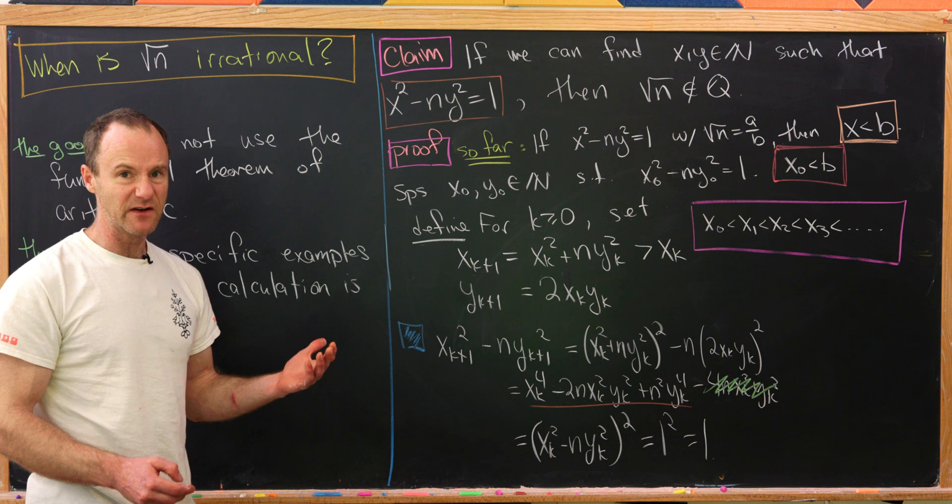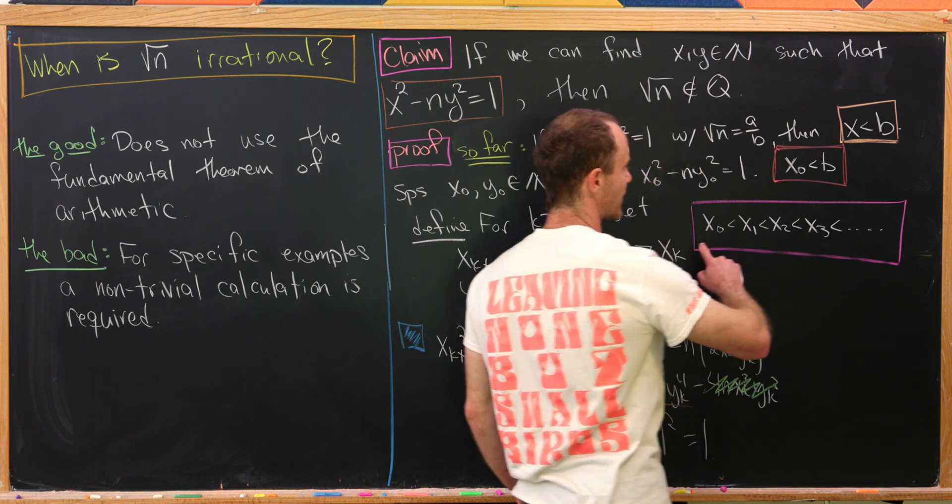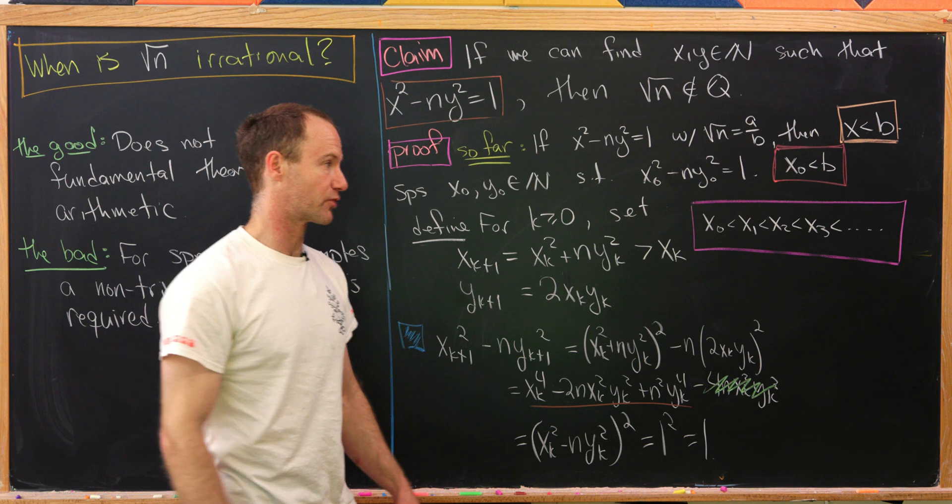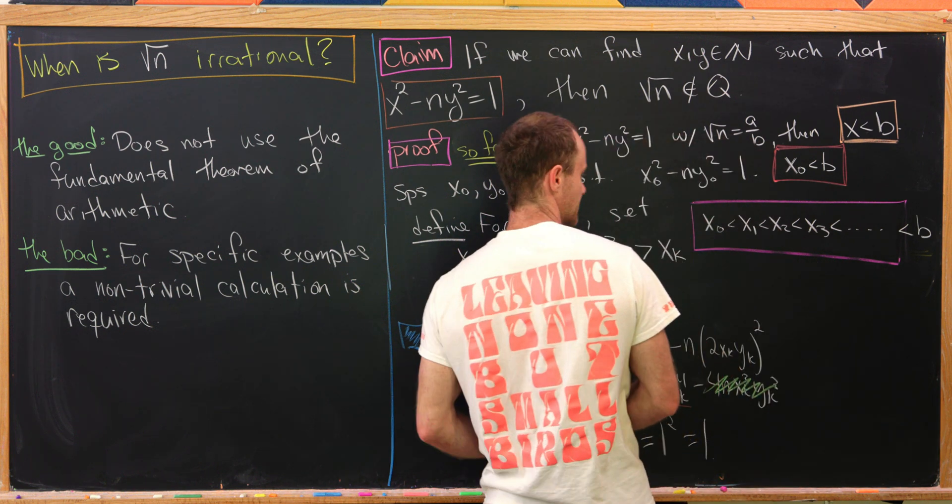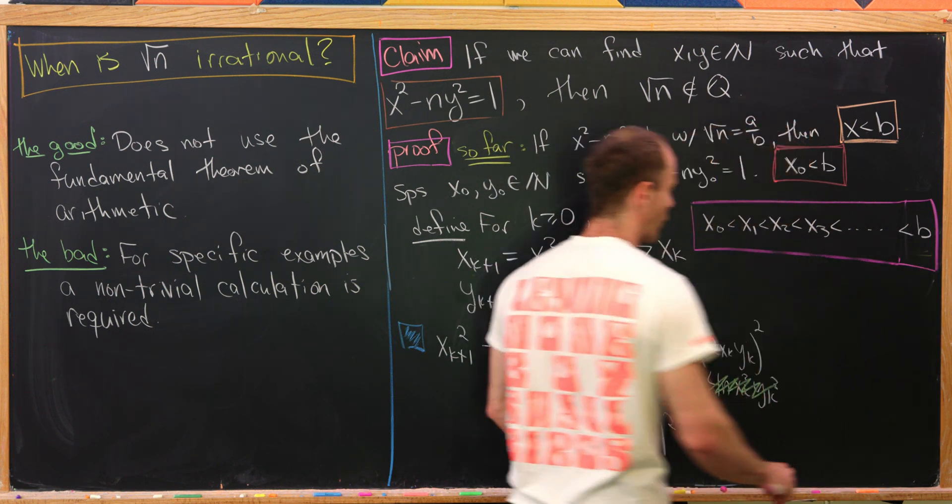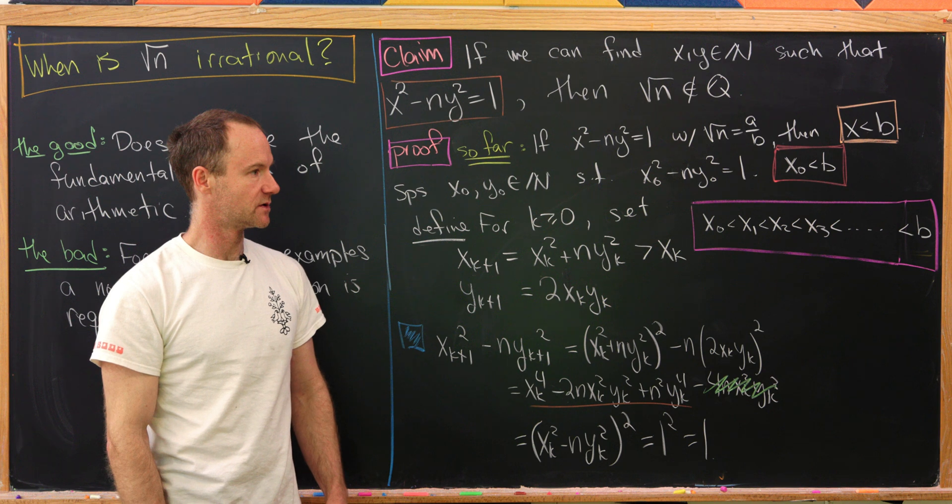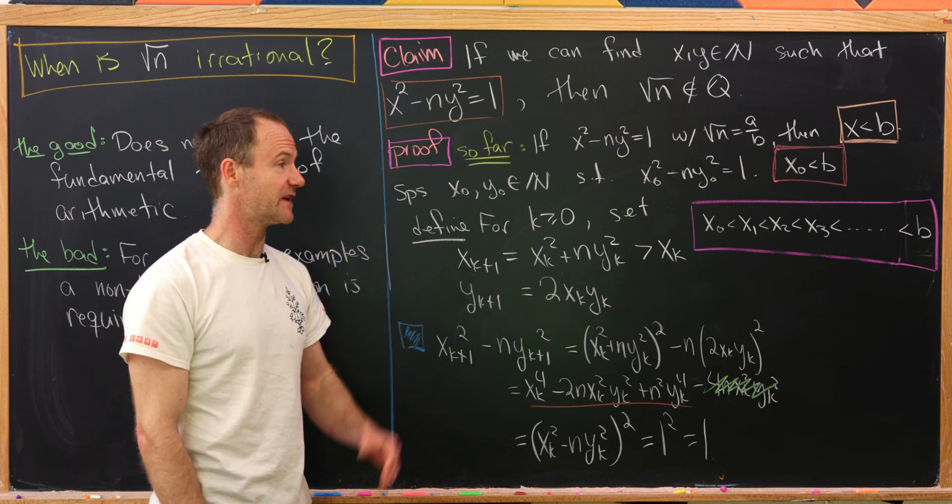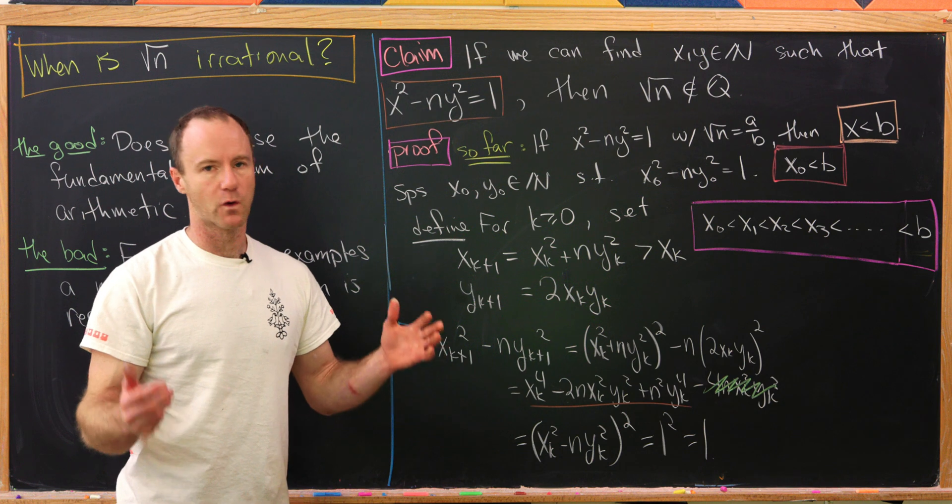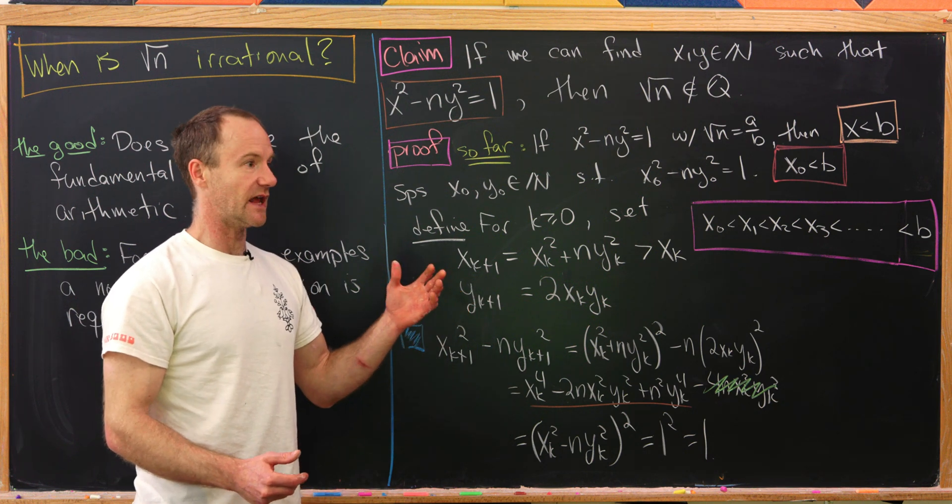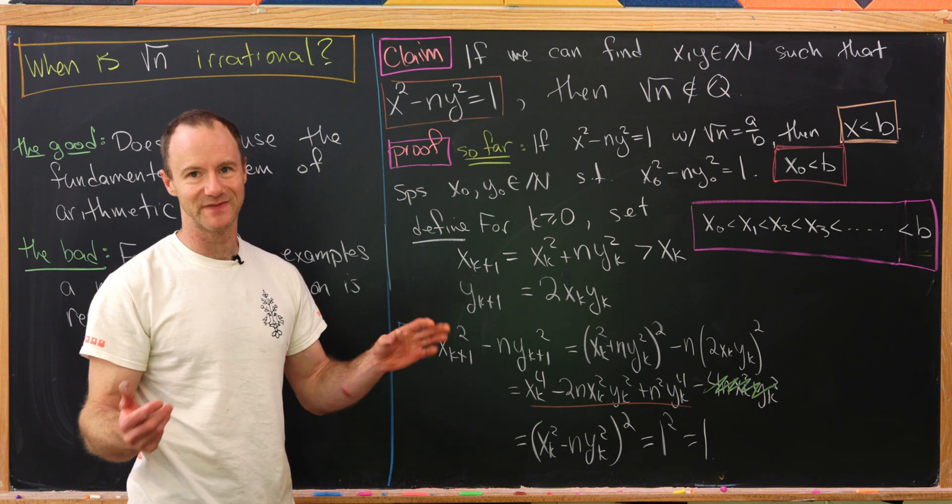So that means we've got infinitely many solutions to our equation. And then furthermore, all of their x parts have to be less than b by our previous result. But now let's sit back a little bit and think why that is a problem. All of the x's are natural numbers. So we have a strictly increasing infinite sequence of natural numbers. But that sequence is bounded above by b. But of course, that's not possible because any strictly increasing sequence of natural numbers that's infinite will grow without bound. That's pretty obvious.